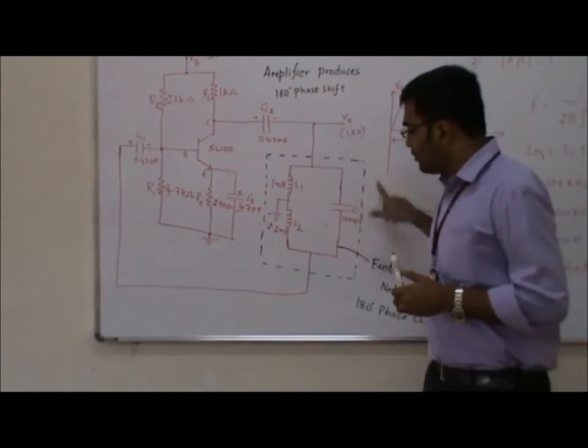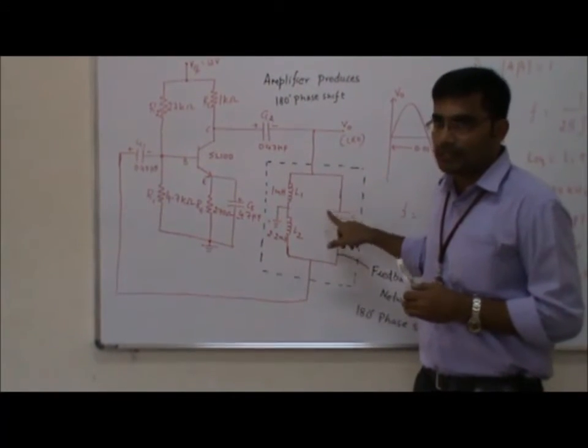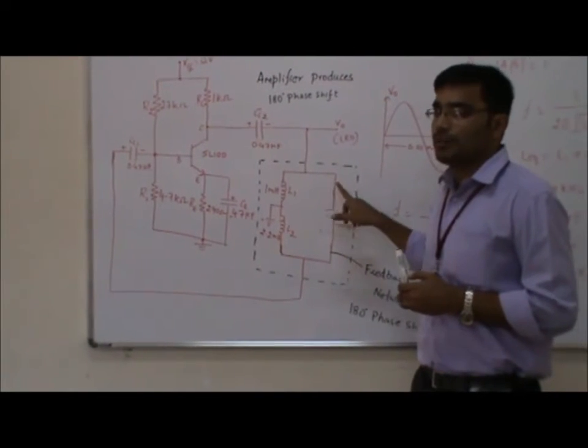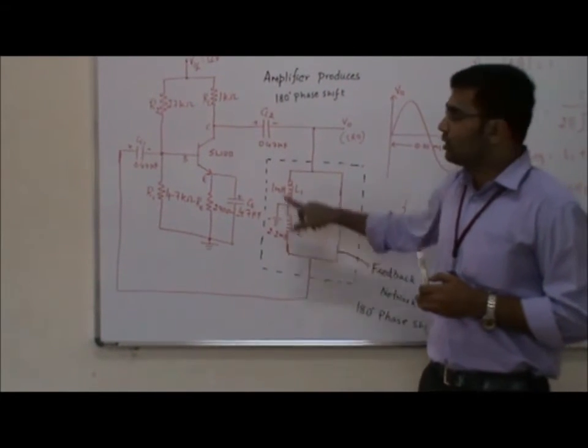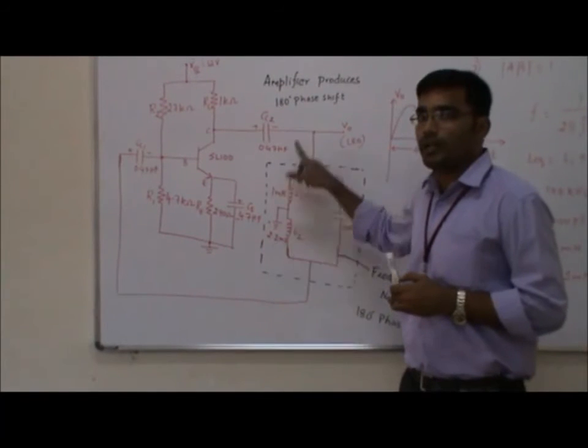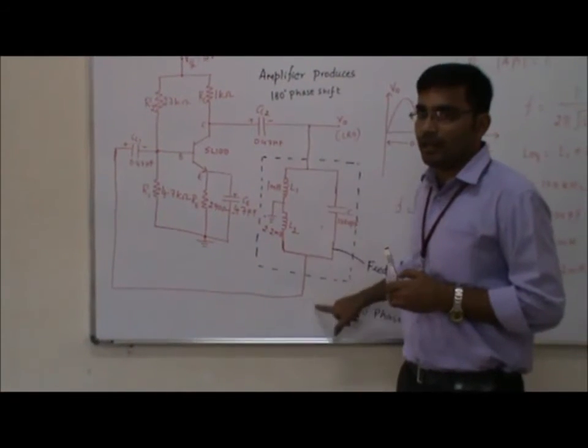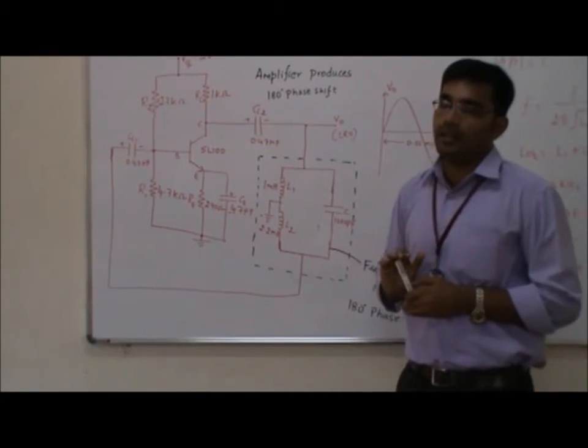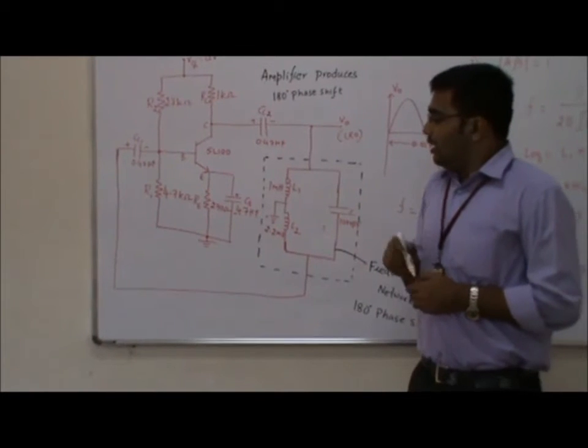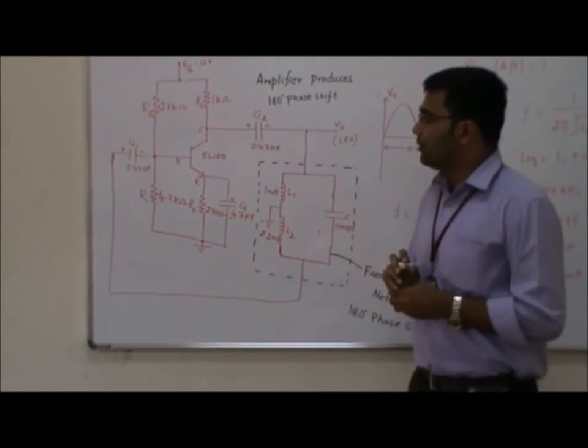The feedback network is called a tank circuit and produces a phase shift of 180 degrees. The total phase shift around the loop is 180 degrees plus 180 degrees, equaling 360 degrees. This is how the circuit works.